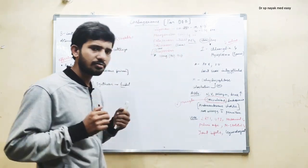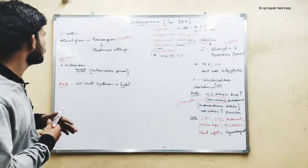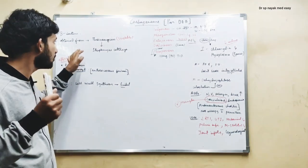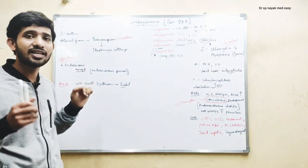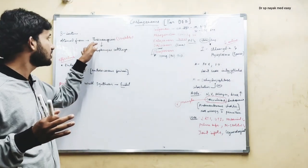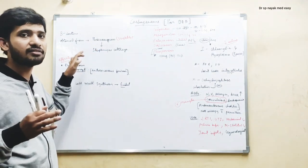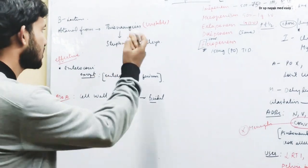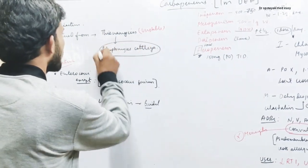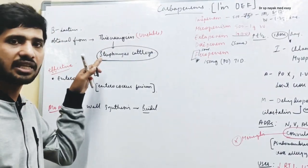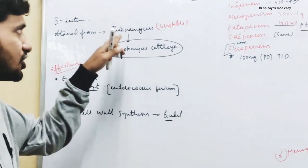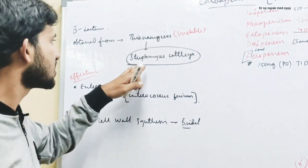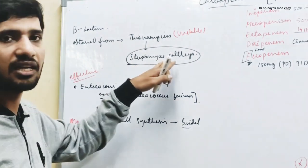Carbapenems are the derivatives of thenamycin. Carbapenems are developed from thenamycin, which is an unstable beta-lactam antibiotic. Thenamycin is the parent drug from which carbapenems are obtained, and it is synthesized from Streptomyces catelia.